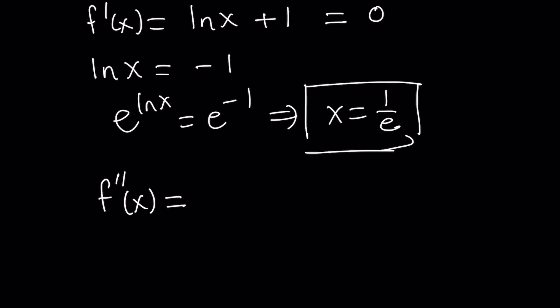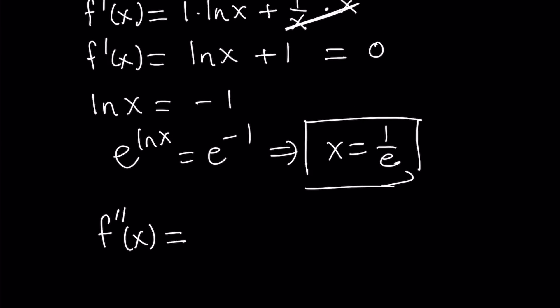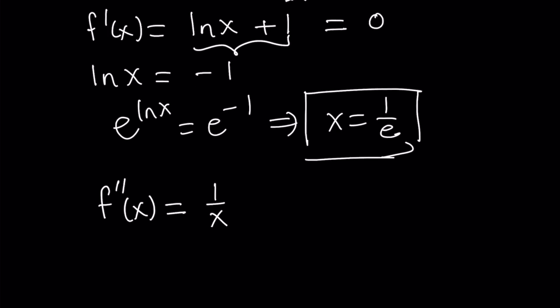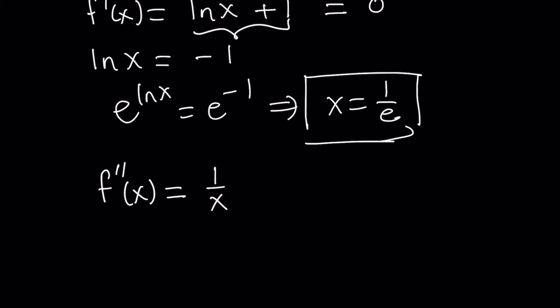So the second derivative is the derivative of the first derivative. And if you differentiate this, ln x plus 1, you're going to get 1 over x. Because the derivative of 1 is 0. Now, I don't want to set it equal to 0 because 1 over x can never be 0. But rather, I want to evaluate this at my critical point. So what is the second derivative at 1 over e? And you can safely say that 1 over 1 over e is just going to be e.